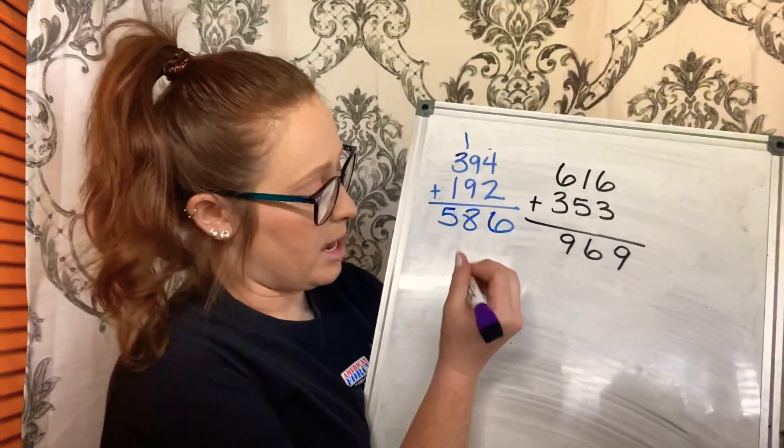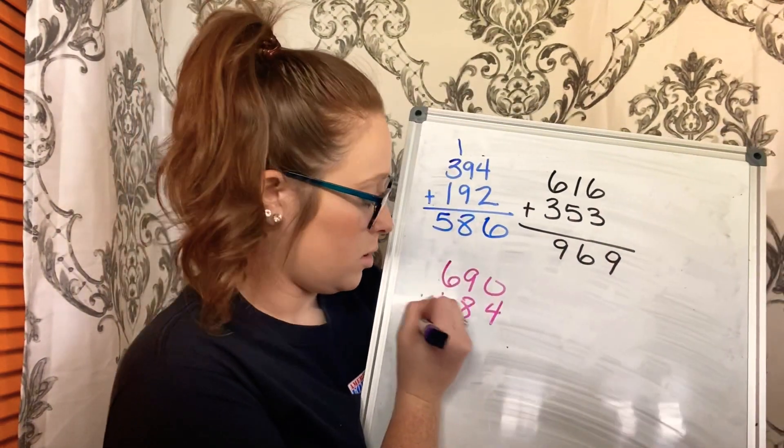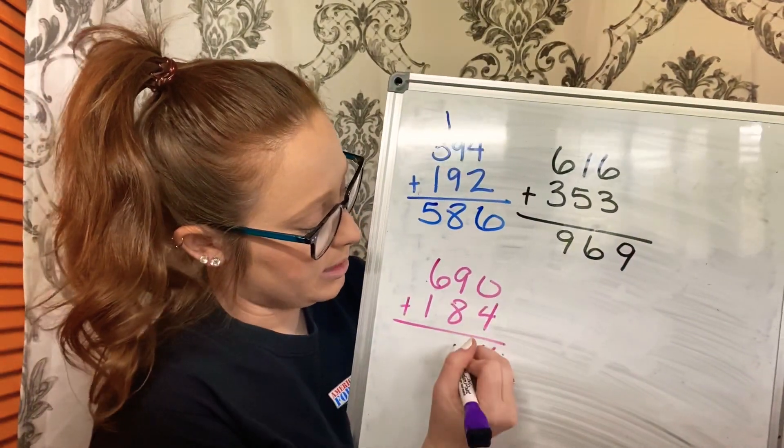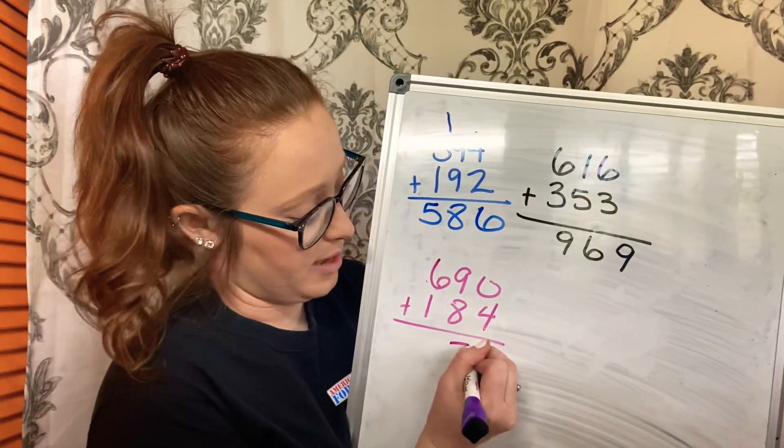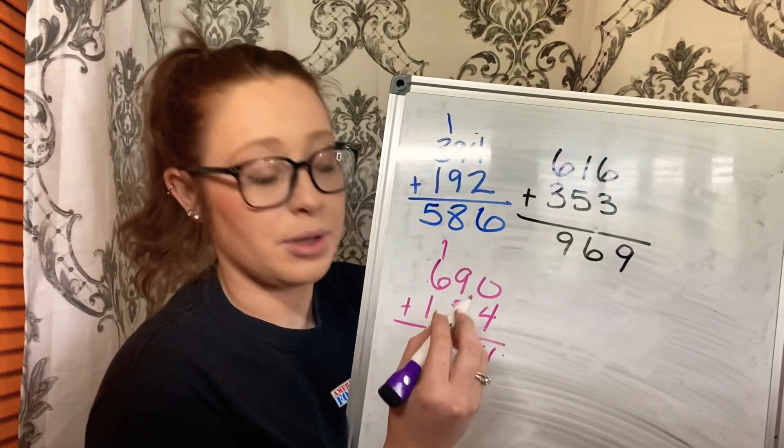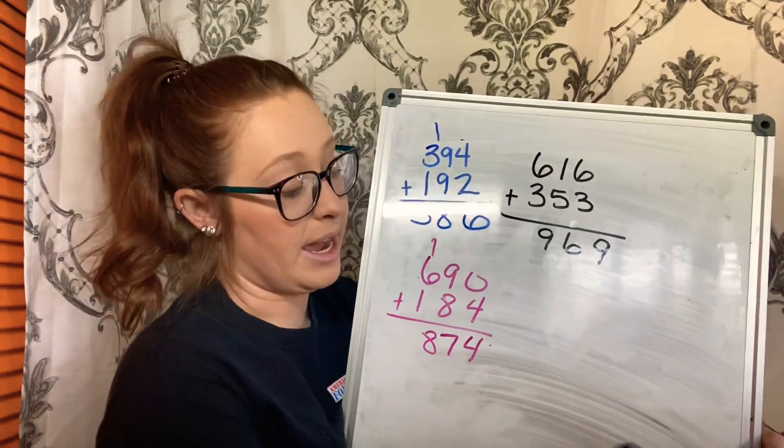Alright, next one, we have 690 plus 184. So, 0 plus 4 is 4, 9 plus 8 is 17, so I've got to put my 7, carry my 1. 1 plus 6 is 7, 7 plus 1 is 8. There's my answer. I had to carry that.